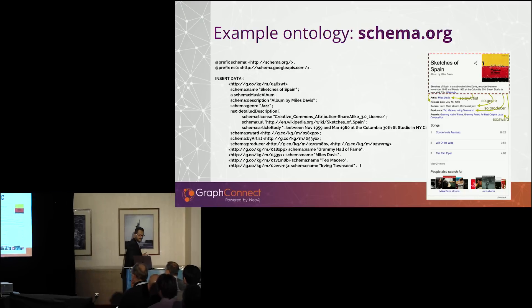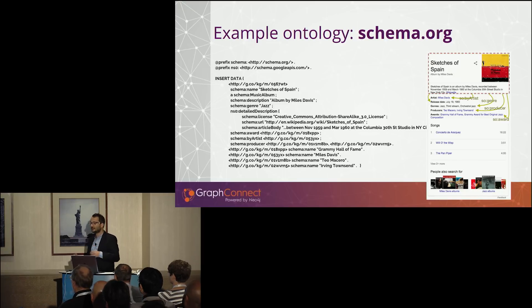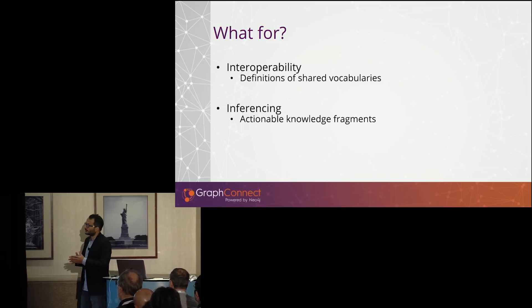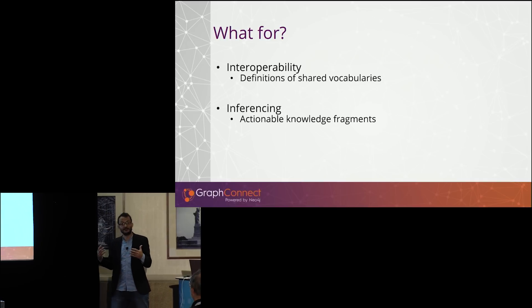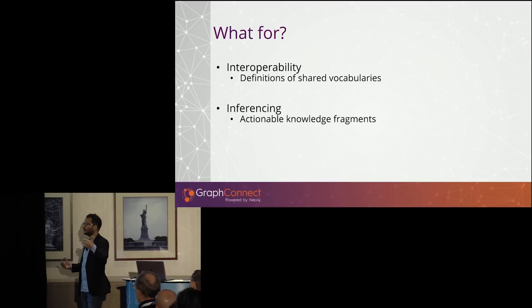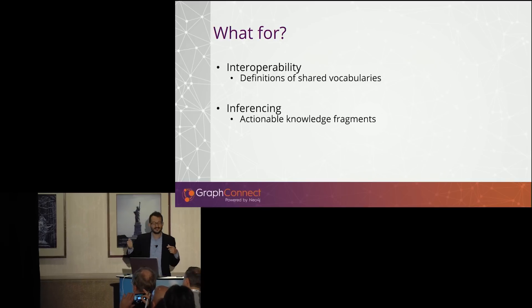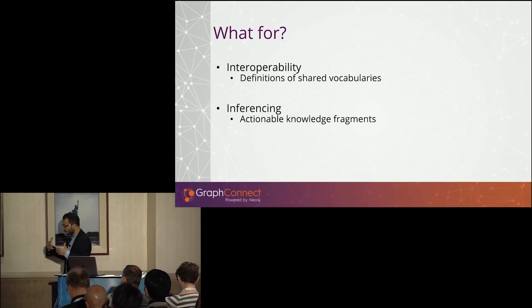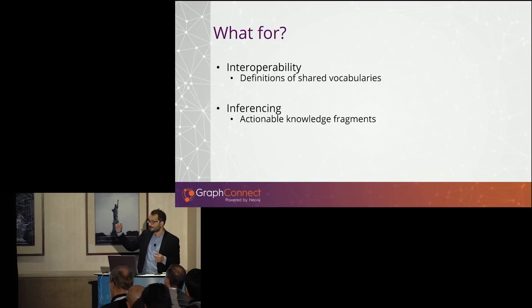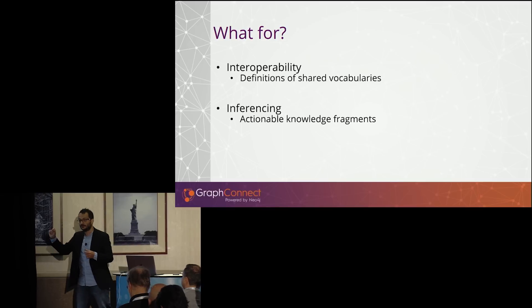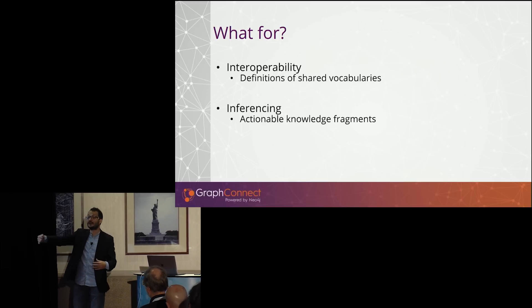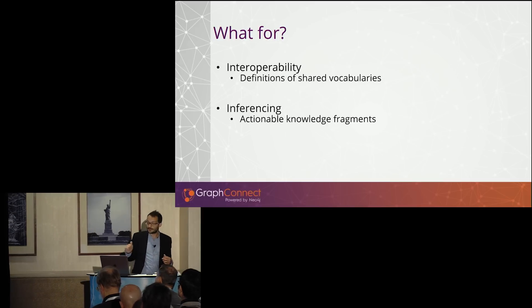Ontologies are out there, they're being used, and I want to benefit from that — I have my data in Neo4j and I want to use them as well. There are two main uses of ontologies. The first is interoperability: if it's a shared vocabulary and I expose my data according to that vocabulary, people will be able to use and understand it because there's a formal definition — they can construct applications that consume that data. The second, equally important, is inferencing: an ontology includes fragments of knowledge I can use to run inferences — to infer new knowledge out of existing data and derive new facts from my graph database.